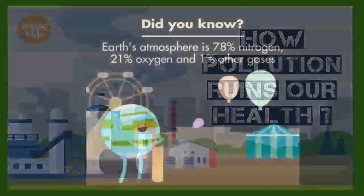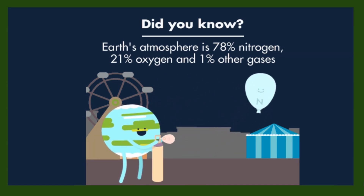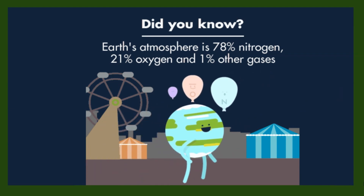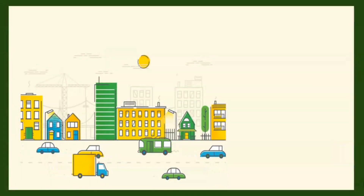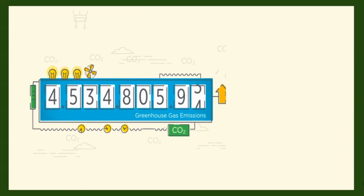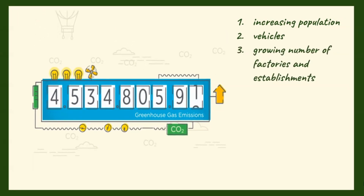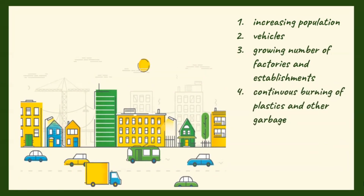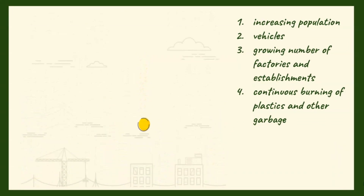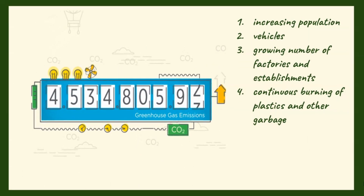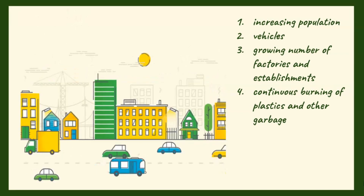Air is an invisible mixture of gases such as nitrogen and oxygen that surrounds the earth. Without air, plants, animals, and humans will not survive. However, as time goes by, the quality of air has changed. This is due to the increasing population, vehicles, growing number of factories and establishments, continuous burning of plastics, and other garbage that result in pollution. Air pollution is the introduction of materials into the atmosphere that produces adverse effects, especially to humans and their daily activities.